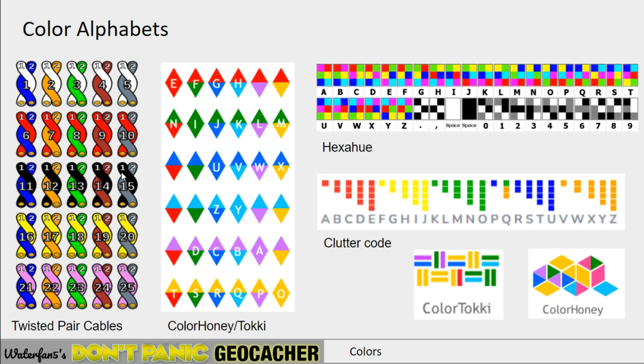So these are just some ciphers or replacements where color combinations represent a letter — colors representing letters. Now let's take a look at some websites and then solve some puzzles.